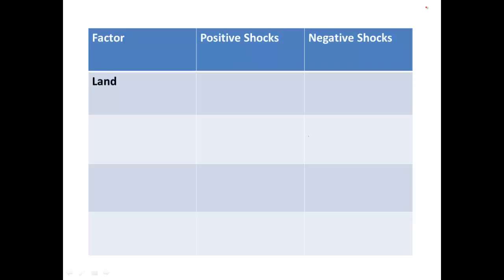Land — and remember, land really isn't just land itself; think in terms of natural resources that come from the earth. What positive shocks can improve the productivity of land? The main thing is good weather — if you have good weather, the land works well to grow crops. A negative shock is bad weather: drought. We've seen that even in the U.S., although because our economy is so large it doesn't really show up in the GDP data. But in poorer, smaller, more primitive economies it definitely will. We can also look at natural disasters, which can literally wipe away some of your land or make it a lot less productive.